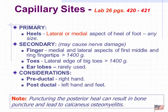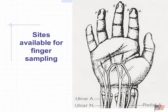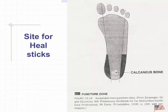Looking at the fingers, the puncture sites are on the side of the finger — the lateral or medial aspect of the distal phalange, on either side of the nail — not on the pad itself. For the heel stick, you want to stay away from the actual heel bone itself; we'd rather go on the sides.